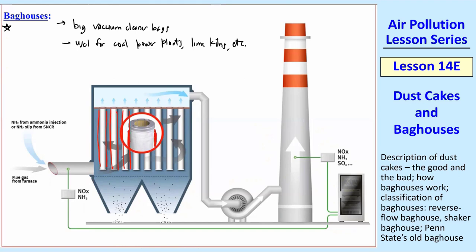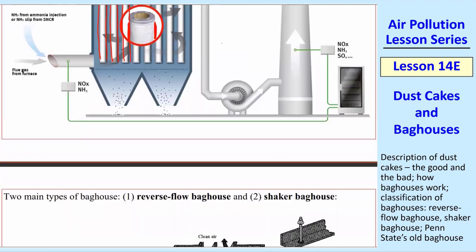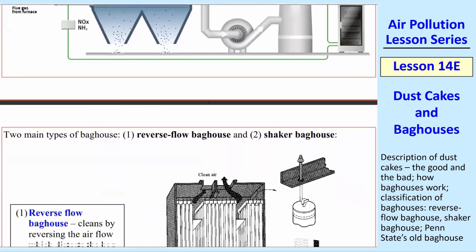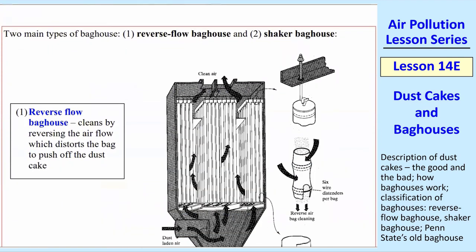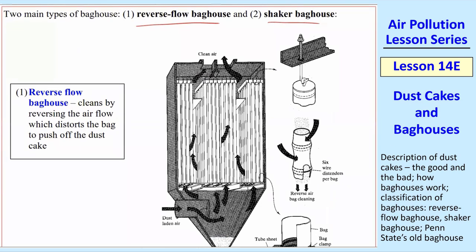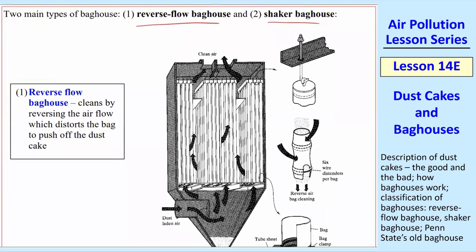I'll draw it in more detail here on this zoomed-in portion. So you have to have some mechanism of taking this dust cake off, removing the dust cake, and cleaning the bags. There are two main types of bag houses based on how you get rid of the dust cakes: reverse flow and shaker. These names are somewhat self-explanatory.